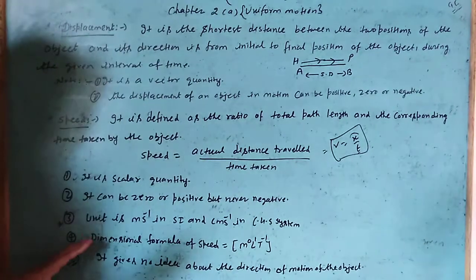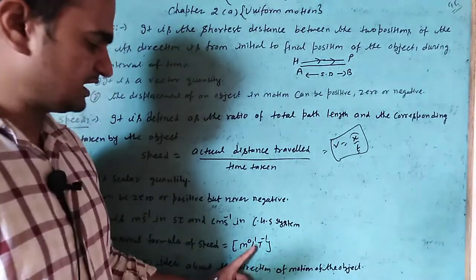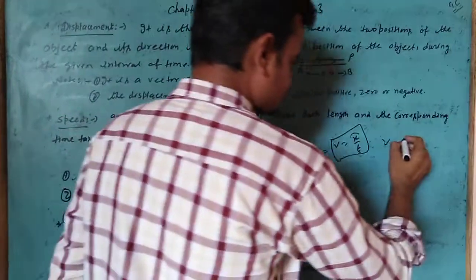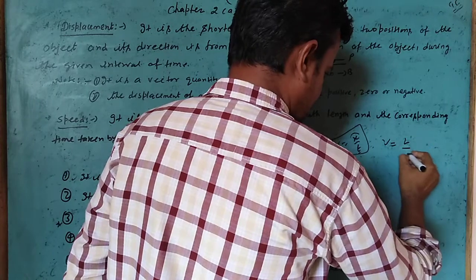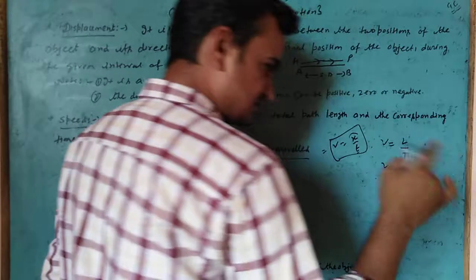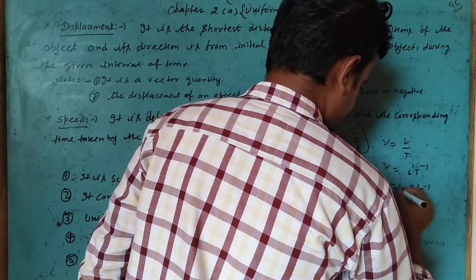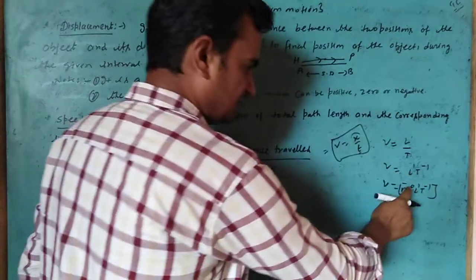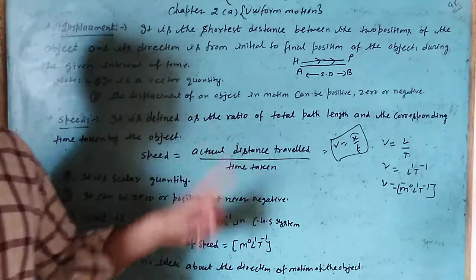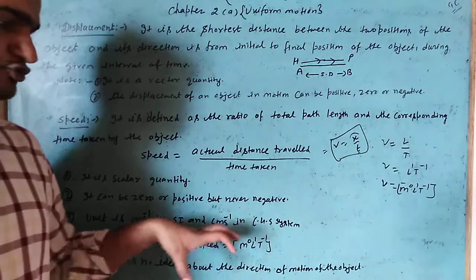The dimensional formula of speed is M0 L1 T-1. Distance is measured in length (L1) and time is T-1, while mass is independent so it is M0. Therefore, the dimensional formula of speed is M0 L1 T-1. Additionally, speed gives no idea about the direction of motion of the object.